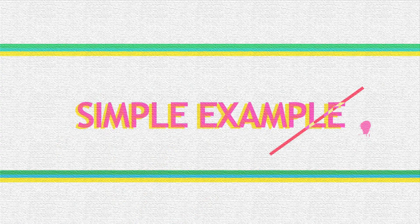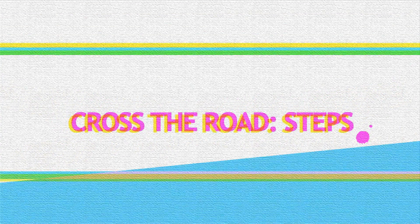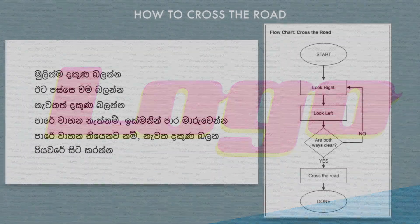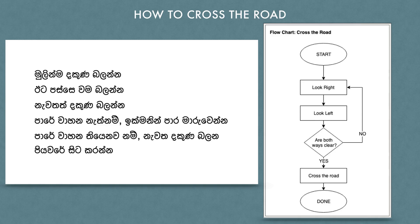For example, let's recall how we were taught to cross the road safely in kindergarten. First, check the right side of the road, then the left and again the right. We cross the road if both ways are free of vehicles. If not, we should repeat from the first step until it's safe to cross. It's exactly like this when it comes to computers too — we need to tell clearly each step it must follow to do our task.